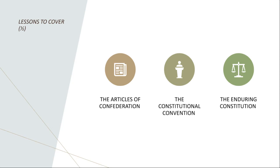Moving on to lesson two: the Constitutional Convention. The flaws of the Articles of Confederation prompted leaders to seek a more effective system of government. In 1787, delegates — or representatives — from 12 of the 13 states gathered in Philadelphia for the Constitutional Convention, a pivotal moment in American history. Delegates such as James Madison, Benjamin Franklin, and George Washington debated and crafted the U.S. Constitution, which would become the supreme law of the land.